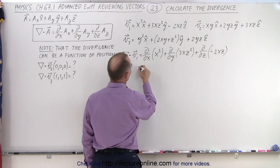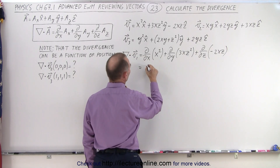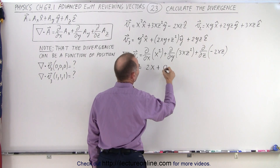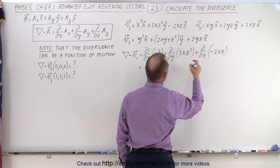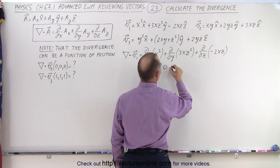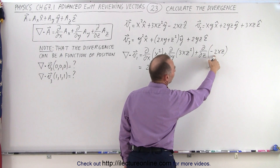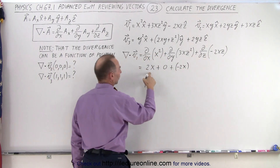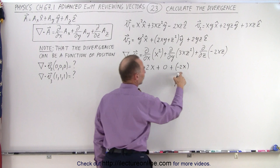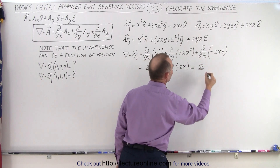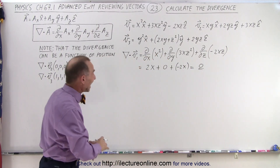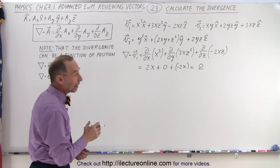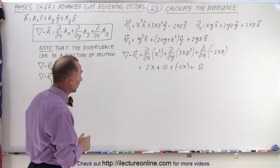When we calculate that, we get 2x, plus — there's no y in there, so it would be 0 — and then plus a minus 2x. So we have plus 2x minus 2x, which is equal to 0, which means there's no divergence anywhere in space, at least not with vector field number 1.